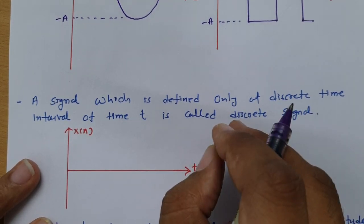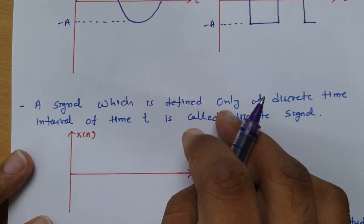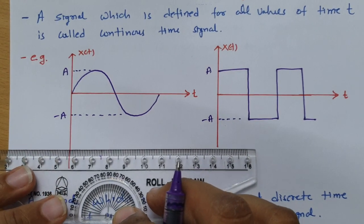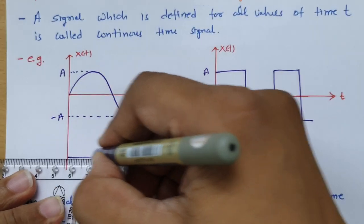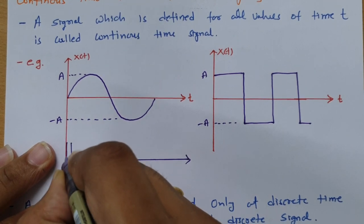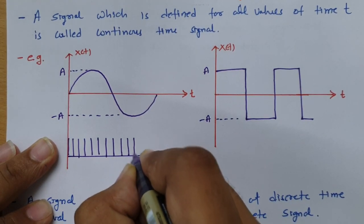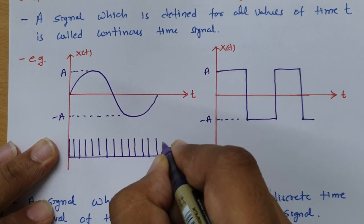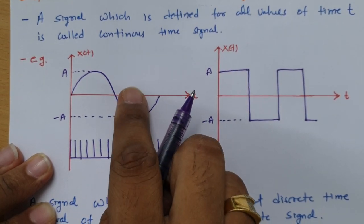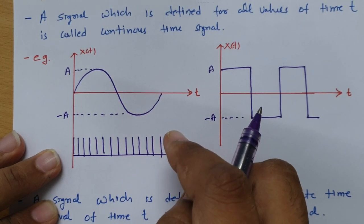For a discrete signal we usually do a sampling process, and after sampling one can have a discrete signal. For example, if you have a sine wave and want to obtain a discrete signal, in sampling all we do is multiply an impulse train with this signal.